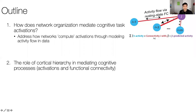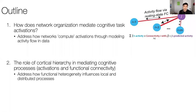The second main point addresses the role of cortical hierarchy in mediating cognitive processes. There has been a ton of work looking at the functional heterogeneity—such as specialization and flexibility—of different brain areas. I want to examine the influences of heterogeneity on local and distributed processes across the brain.